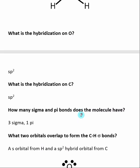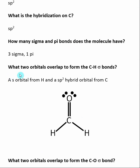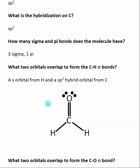Now we want to describe what orbitals overlap to form these bonds. The next question is, what two orbitals overlap to form the C-H sigma bond? Sigma bonds are made by the overlap of a hybrid orbital and an s orbital when involving hydrogen. Hydrogen is not really hybridized — hydrogen is just a single s orbital. So the orbital overlap is going to be between a hybrid orbital and an s orbital from hydrogen. The question becomes, what hybrid orbital is going into the bond? This goes back to the hybridization on carbon.